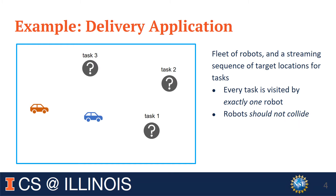To give a more concrete example we study in this work, let's look at this simple delivery problem. Suppose we are given a set of tasks specified by their locations and a set of robots. These robots are required to collaboratively visit each of the delivery locations exactly once, while avoiding colliding with each other. This kind of problem can model, for example, delivering or scanning an inventory in a warehouse.